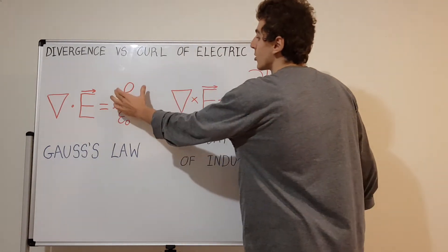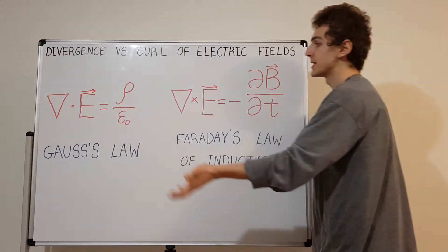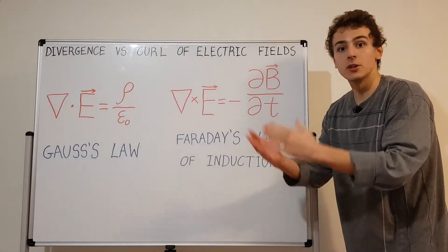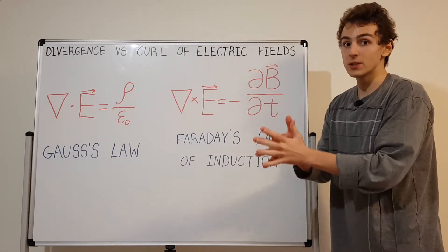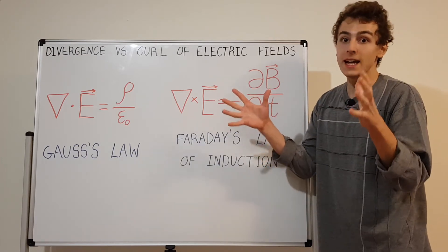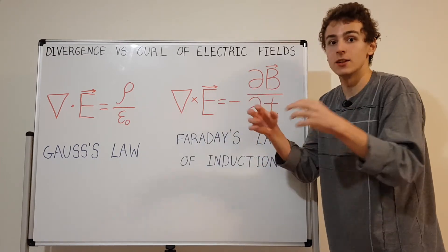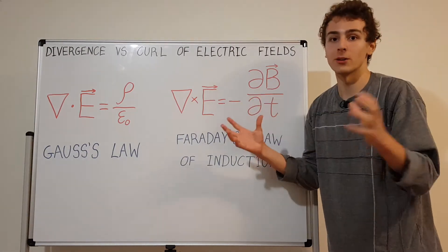The divergence depends on a scalar quantity, the charge density. If there's charge there, you're going to have divergence. If it's a positive charge, it's positive divergence coming out. If it's a negative charge, things are going in towards. It's the termination point of electric field lines.